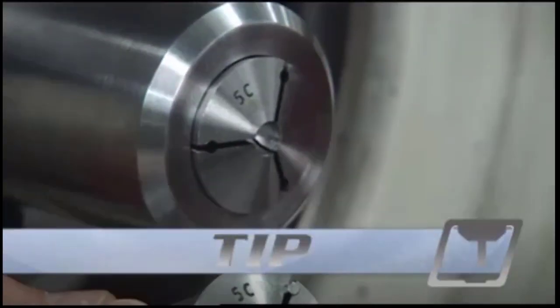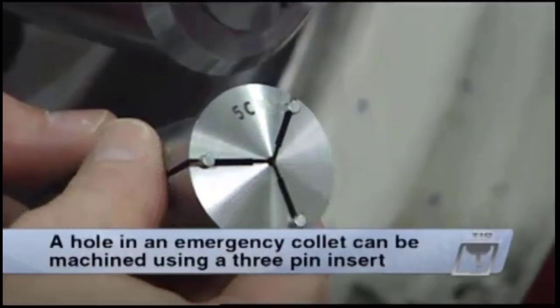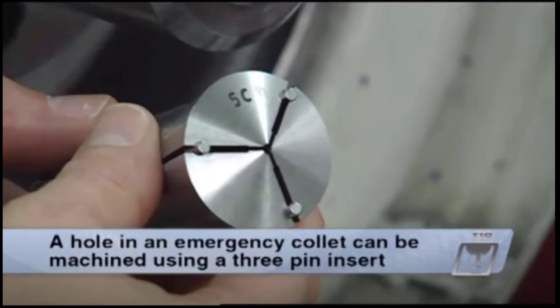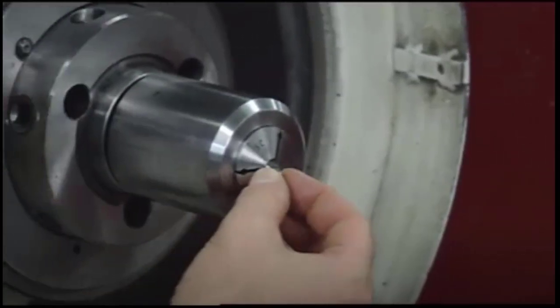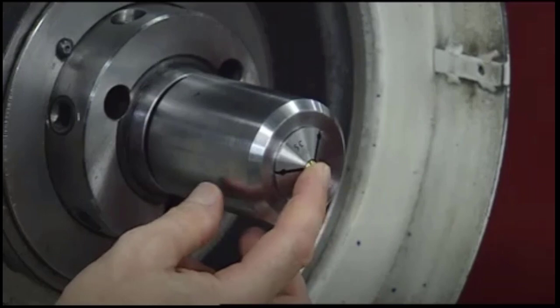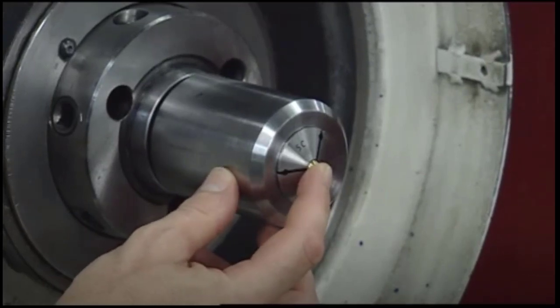Keep in mind that a hole in an emergency collet can be machined using a three-pin insert. After machining, remove the three pins, insert the work, and tighten the draw tube to clamp it in place.